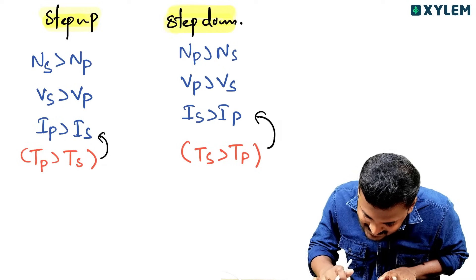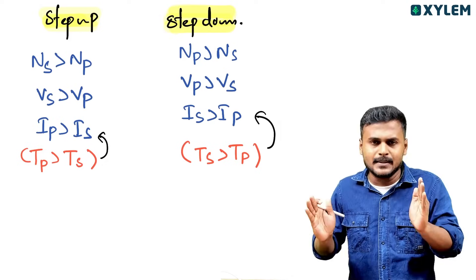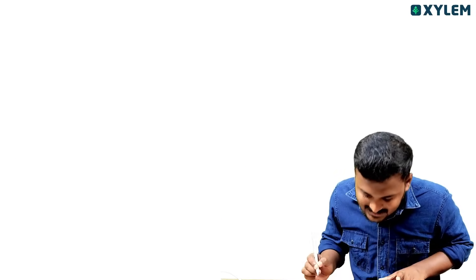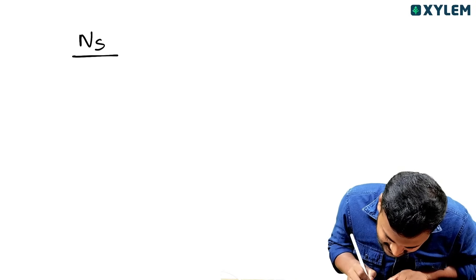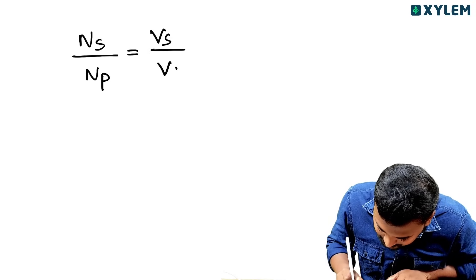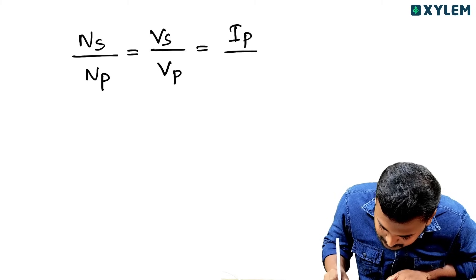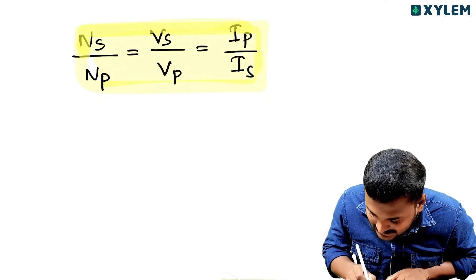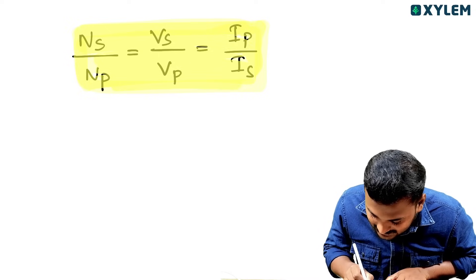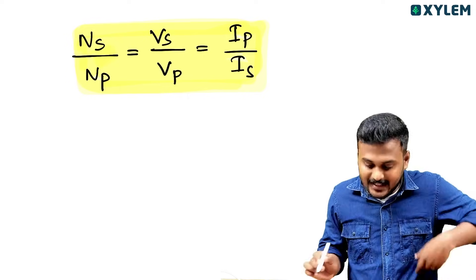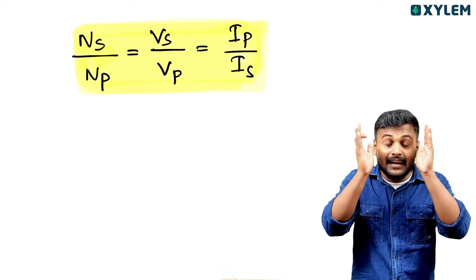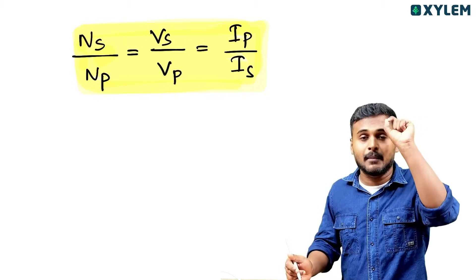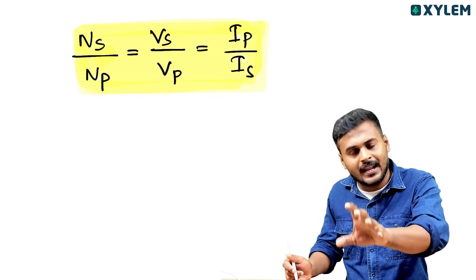This is the case of the transformer. There is a very simple formula: Ns divided by Np equals Vs divided by Vp equals Ip divided by Is. This formula is very important and covers the various functions of a transformer.